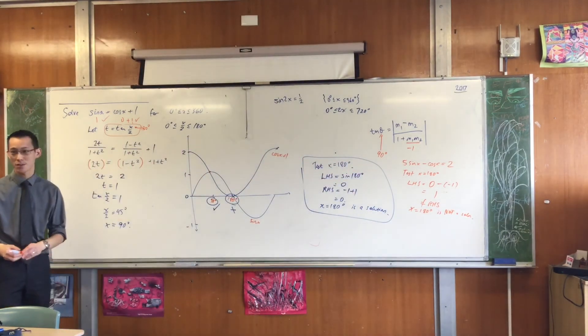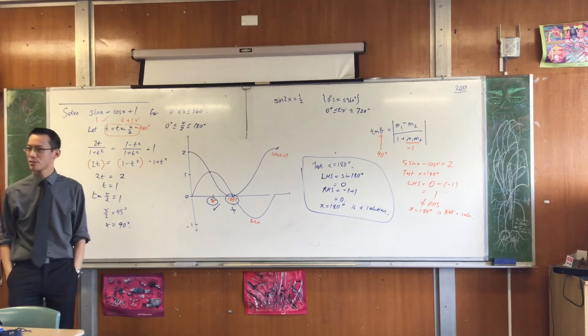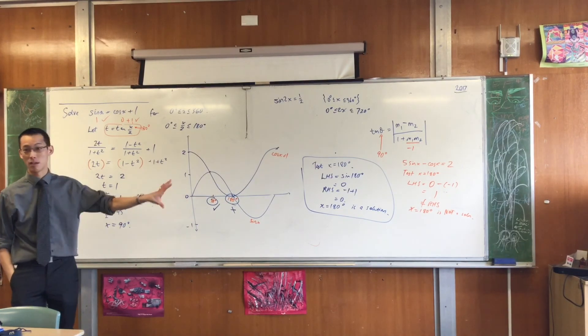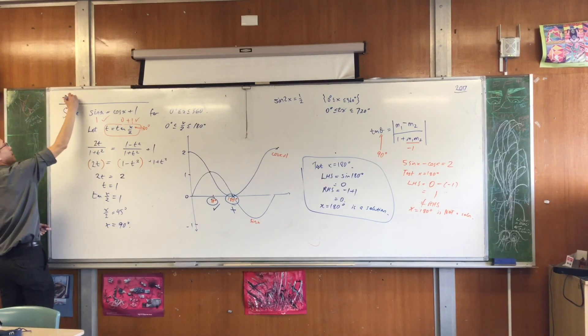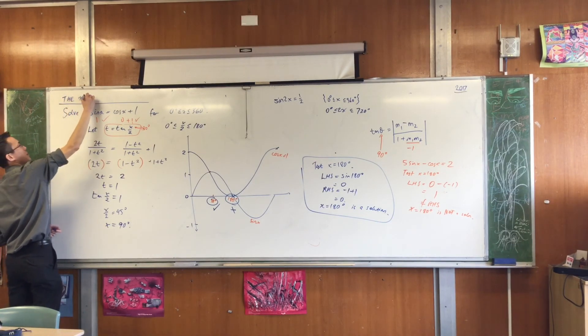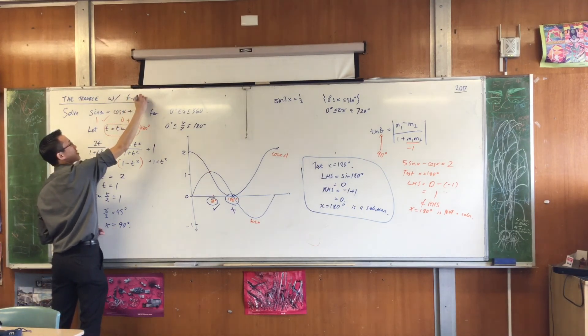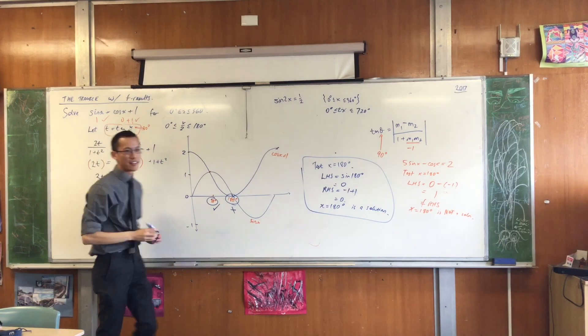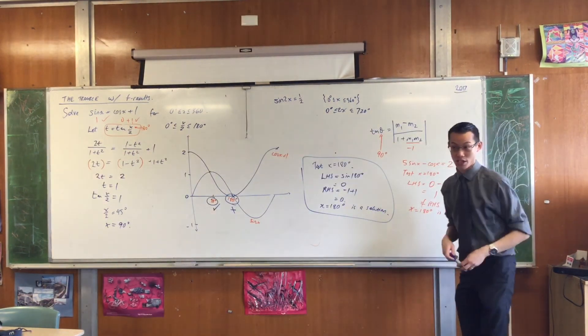Every time that you use t-results for this kind of problem, for solving an equation, you must test. You must test, because it has this blind spot. So therefore, the heading I like to call this is the trouble with t-results. They're cool. They really are quite ingenious. But they have this problem, this blind spot, this Achilles heel, this is what you need to watch after.